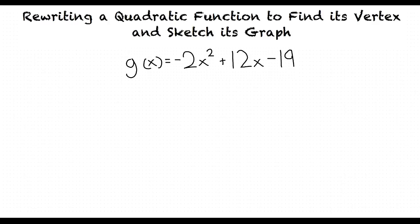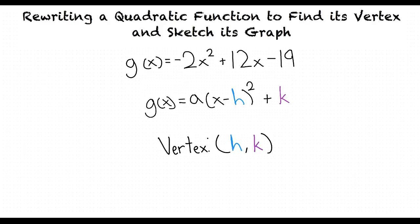Great question! Our overall goal is to get our quadratic function into the form of g of x equals a times x minus h squared plus k, where a, h, and k are constants, and a does not equal zero. In this form, the vertex of our equation would be h, k.